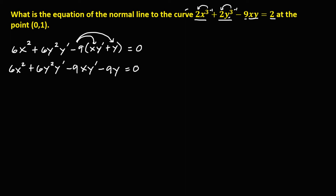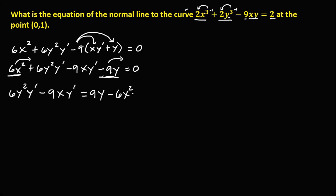To solve for y prime, we group all terms with y prime on the left side, and terms without y prime are transposed to the right side. So we transpose negative 9y and positive 6x squared to the right side. We have 6y squared times y prime minus 9x times y prime equals positive 9y minus 6x squared.